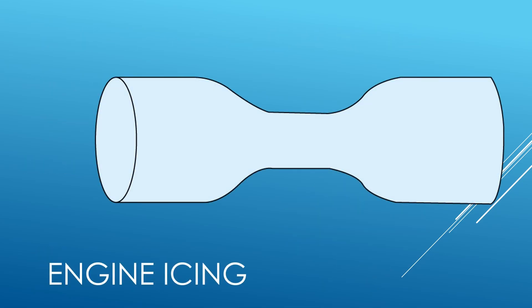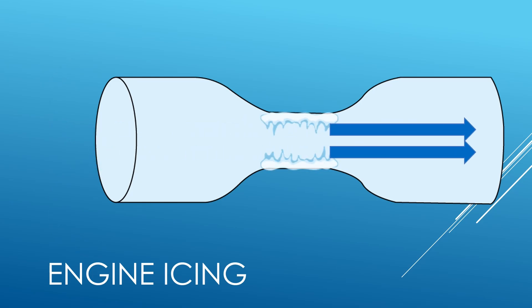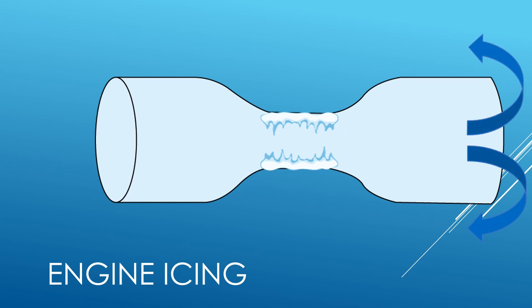Engine icing may form when air passes through either the carburetor venturi or fuel intake, mixes with vaporized fuel, and causes a significant temperature drop within the system, restricting the flow of fuel and air to the engine. Although rare, engine icing and carburetor icing can occur at temperatures far above freezing and with no visible moisture. Induction icing can form at temperatures from -7°C to 21°C and relative humidities as low as 50%. A rough engine and cold carburetor temperatures indicate engine icing.